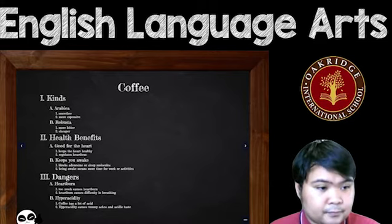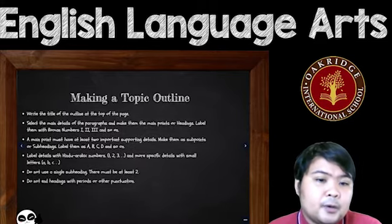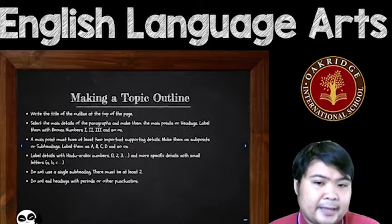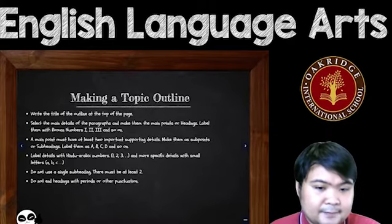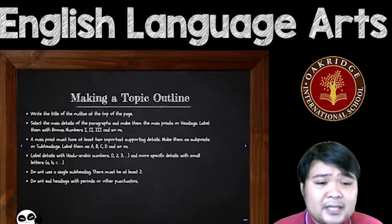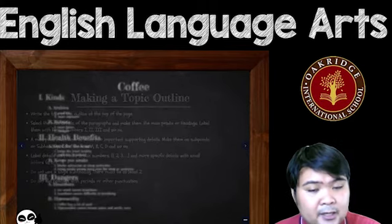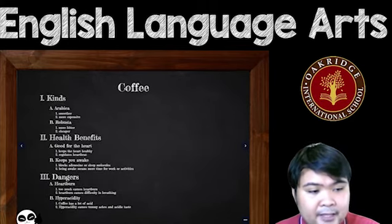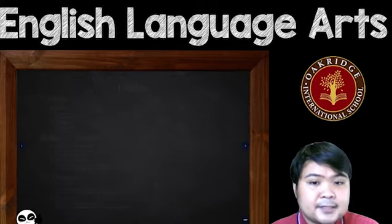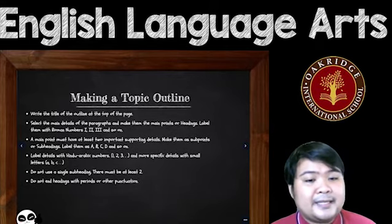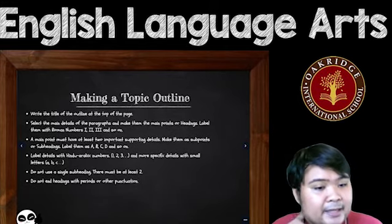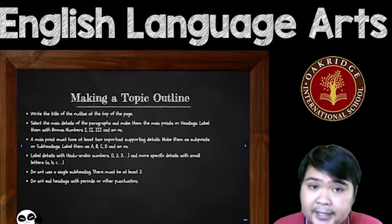When writing a topic outline, consider these things. Number one: write the title of the outline at the top of the page — just like I did with 'Coffee' at the top middle. Number two: select the main ideas and make them the main points or headings, labeling them with Roman numerals 1, 2, 3, and so on. A main point must have at least two subheadings — there should never be just one subheading.